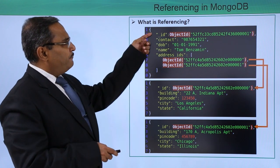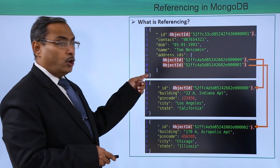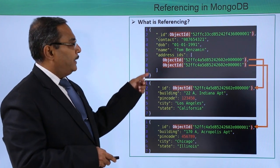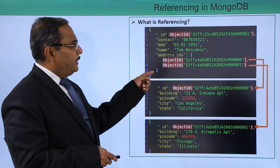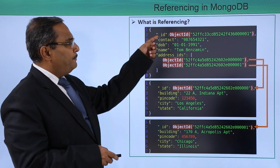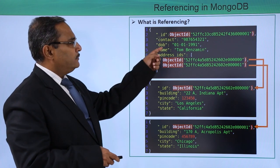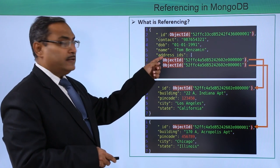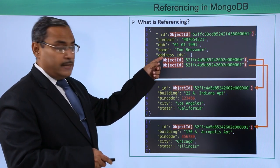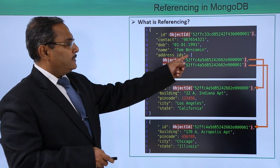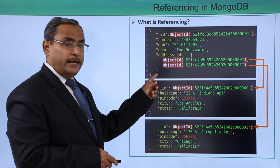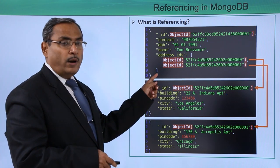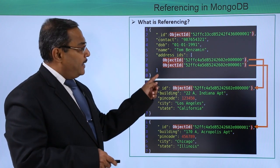Here you can find this is one document. This document has fields: ID, contact, date of birth, name, and address IDs. This address IDs field is containing one array.